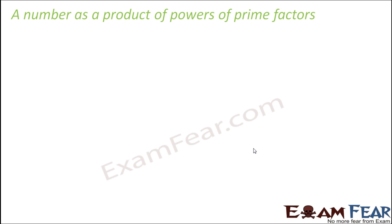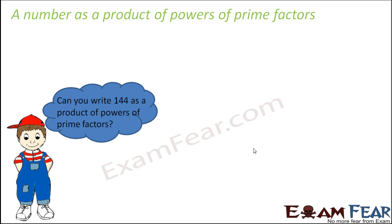Before we write a number like this, let us understand what we mean by writing as a product of powers. We have to write the number in a form where you have a prime factor — and by now you all know what a prime factor is: that factor which cannot be factorized further. Those factors which are not only factors but also prime numbers are called prime factors.